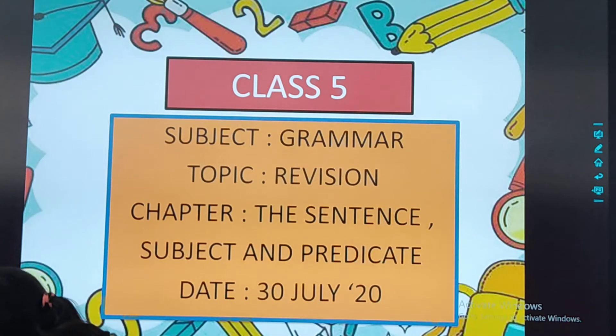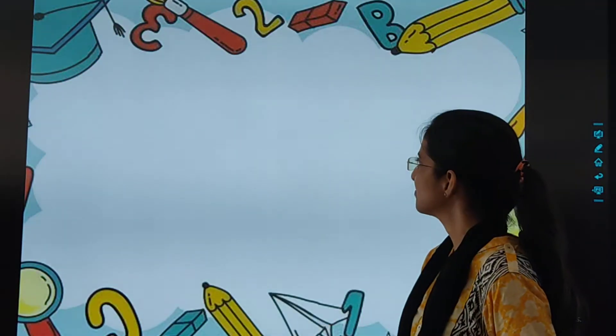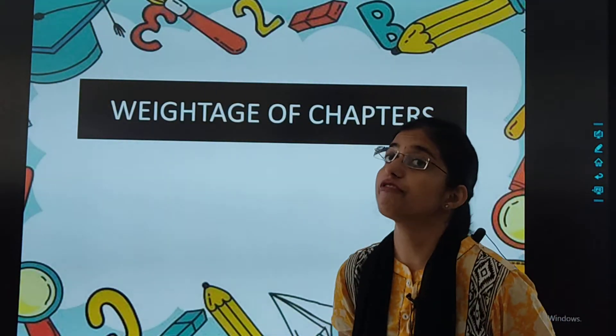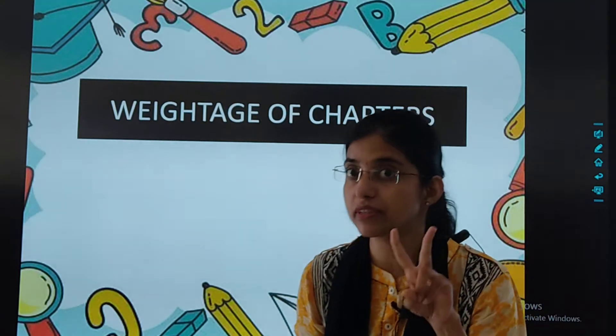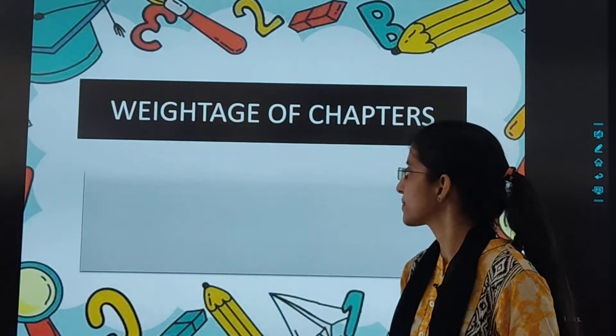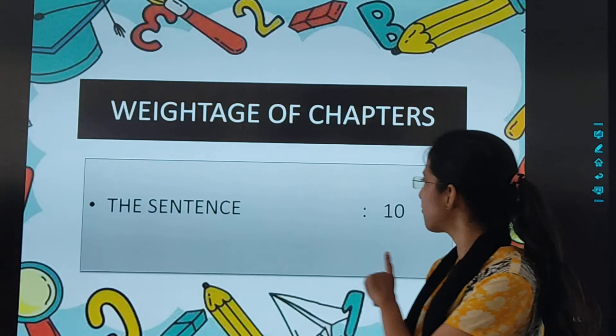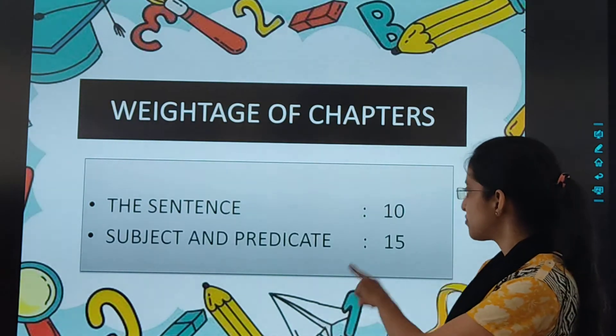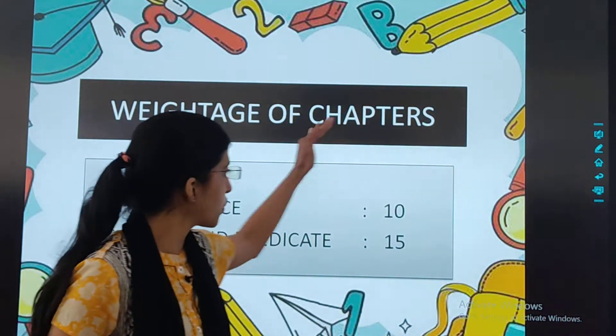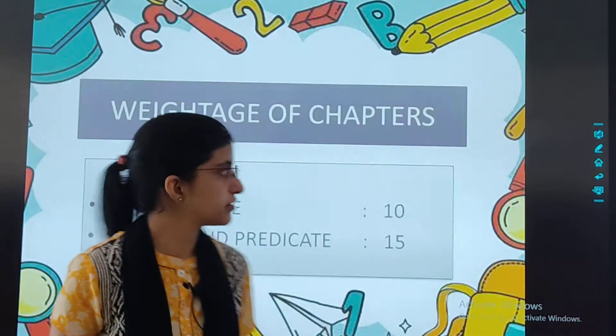Open your eyes slowly. Now let's begin. There are two chapters coming — chapter number one and chapter number two. The first chapter, that is the sentence, is of 10 marks. Subject and predicate is of 15 marks. Total 25 marks.